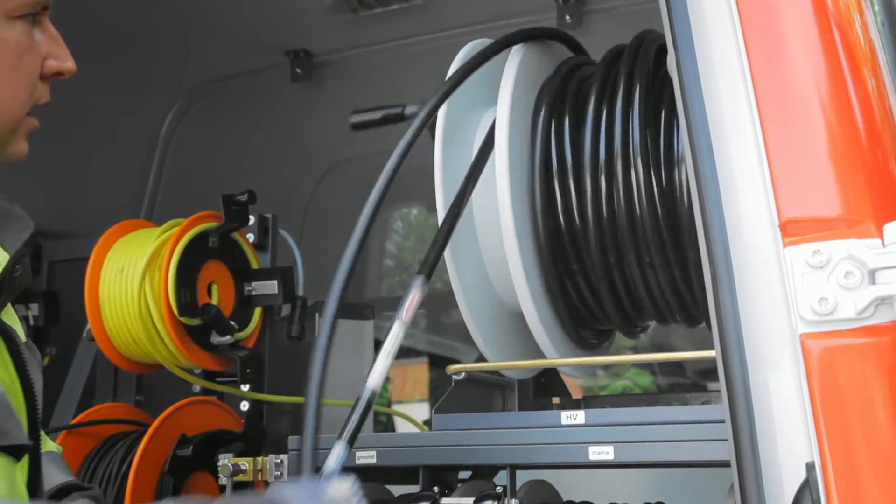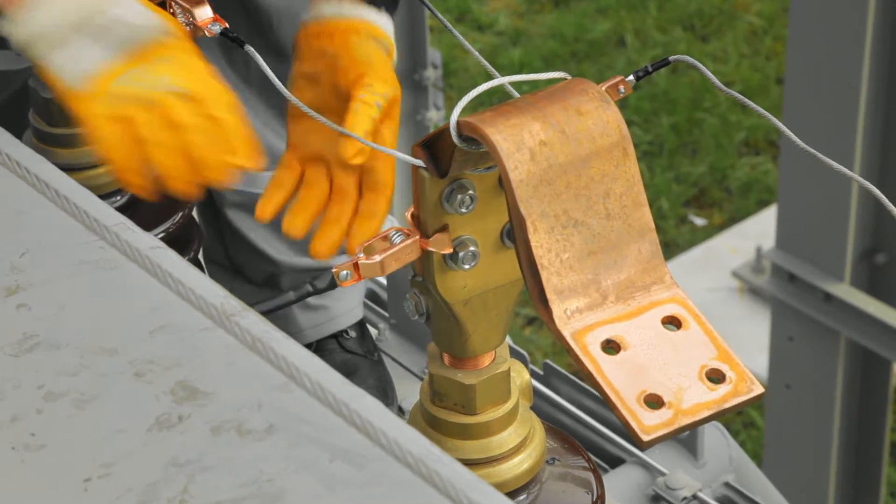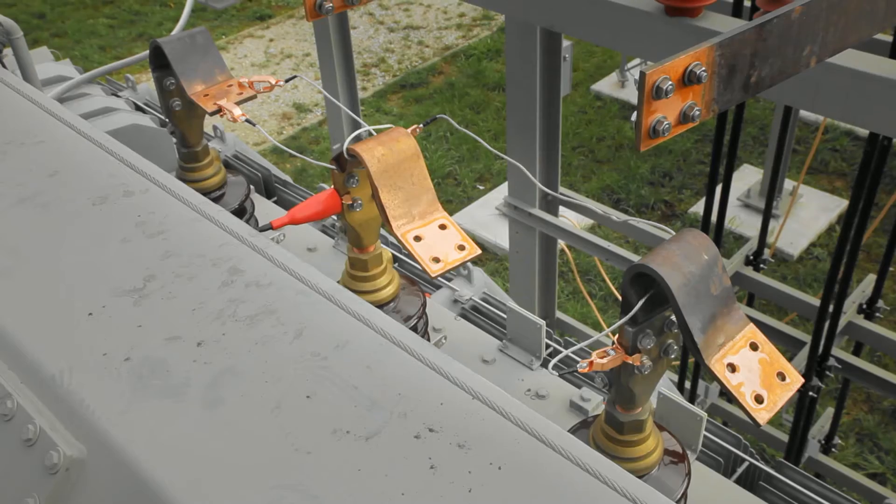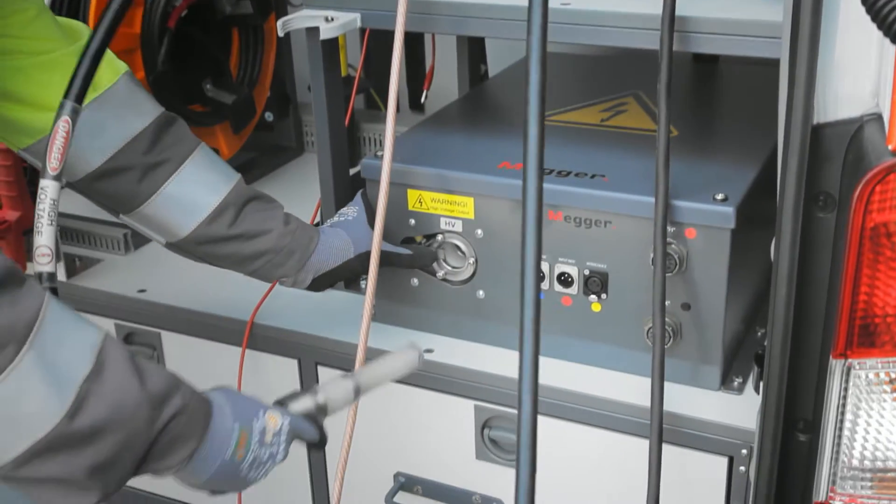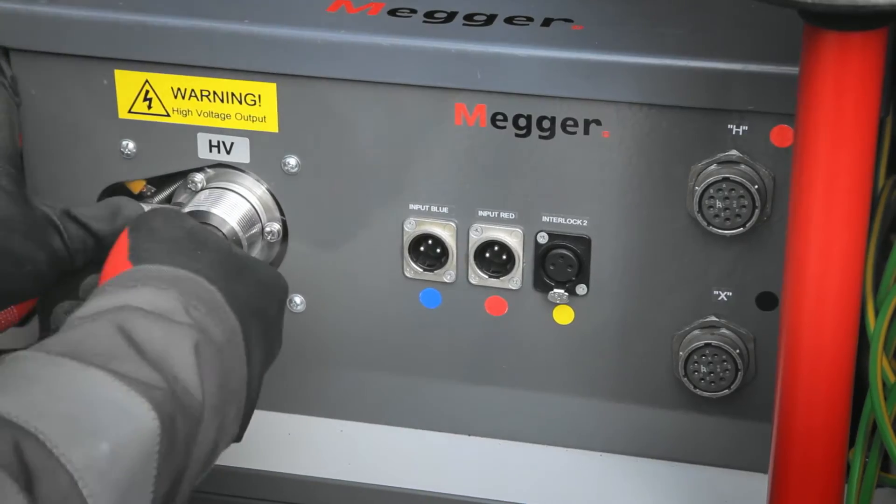Roll out the respective cables, attach them to the transformer bushings and plug the cable ends into the output panel of the switch box.